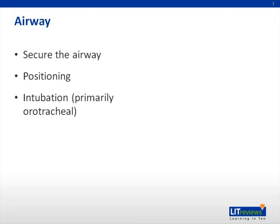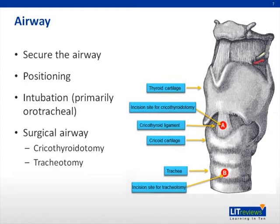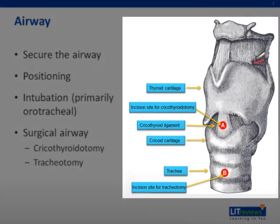Orotracheal intubation provides definitive airway management and is the preferred method. However, in some cases due to trauma to the neck, blood in the oropharynx, excessive secretions, or patient factors such as size or neck circumference, orotracheal intubation is not a viable option. In these cases, a cricothyroidotomy or tracheotomy may be performed. As seen in the picture here, a cricothyroidotomy is done between the thyroid and cricoid cartilage and is usually converted to a tracheostomy later.